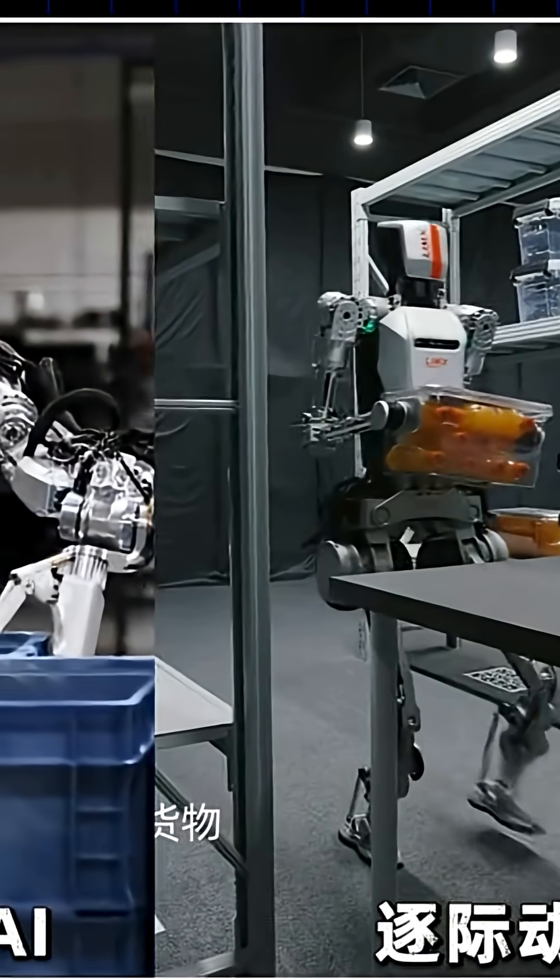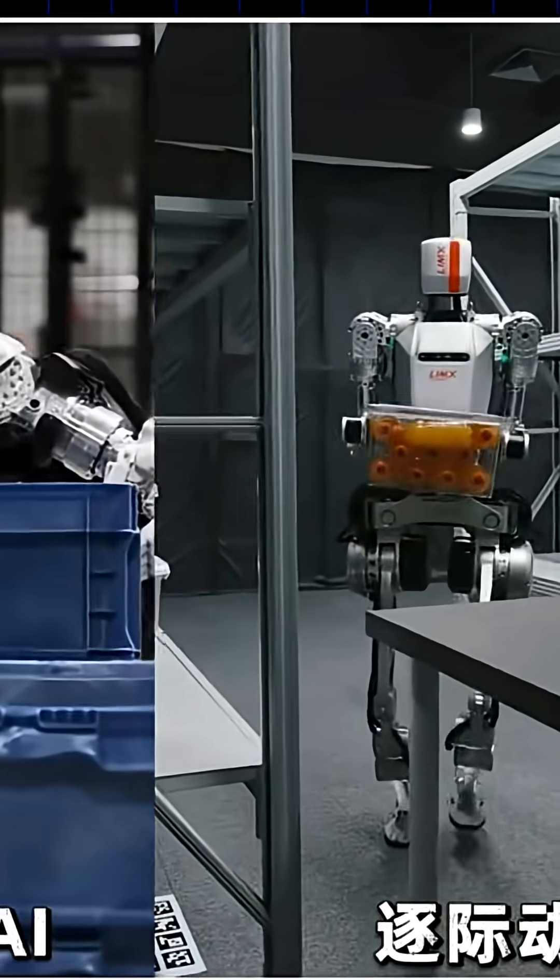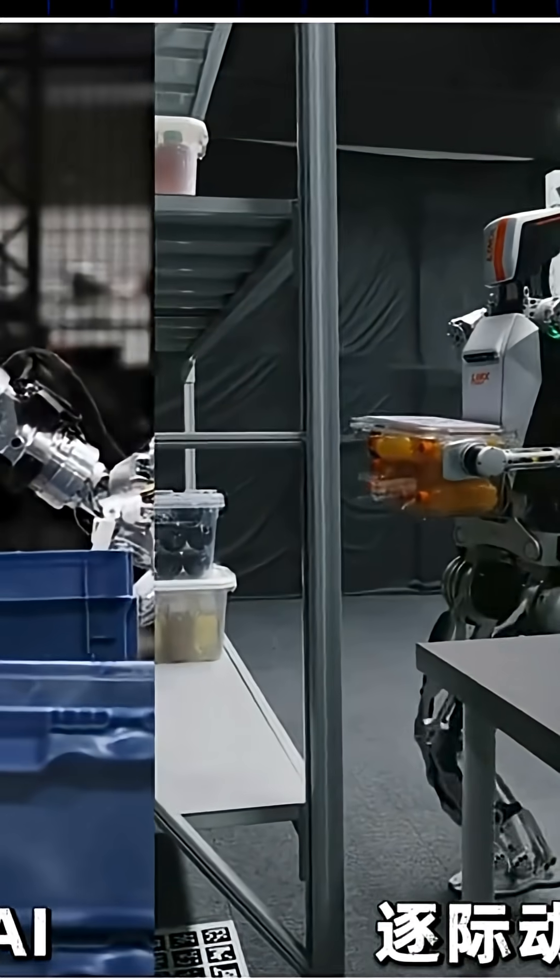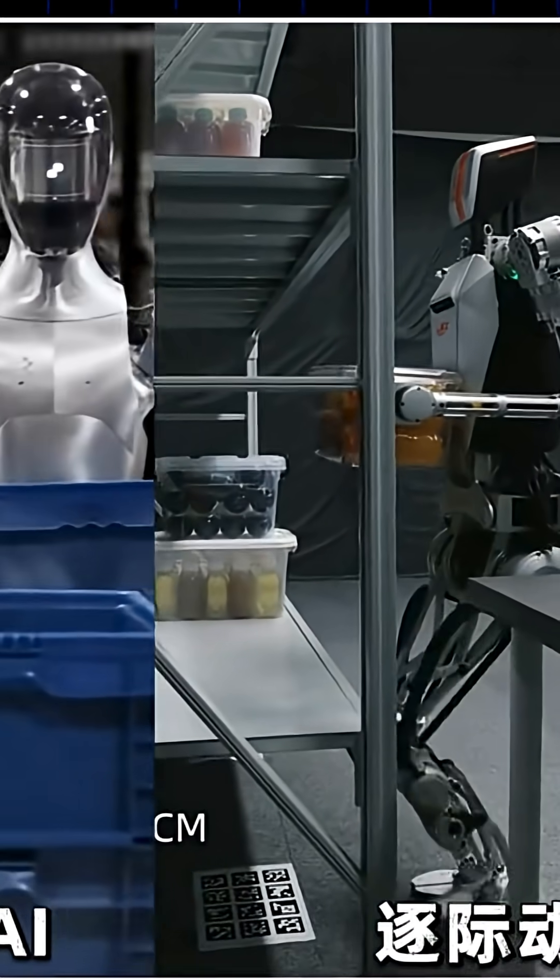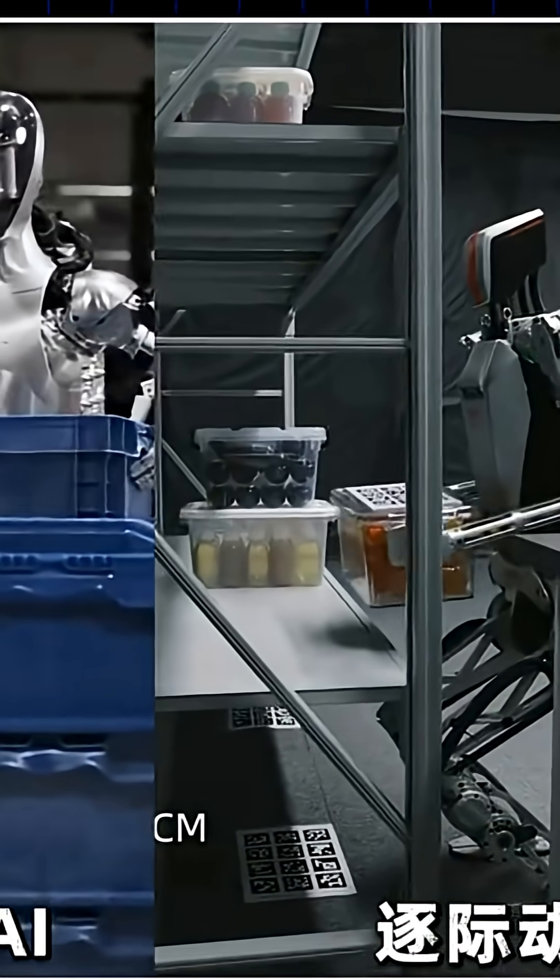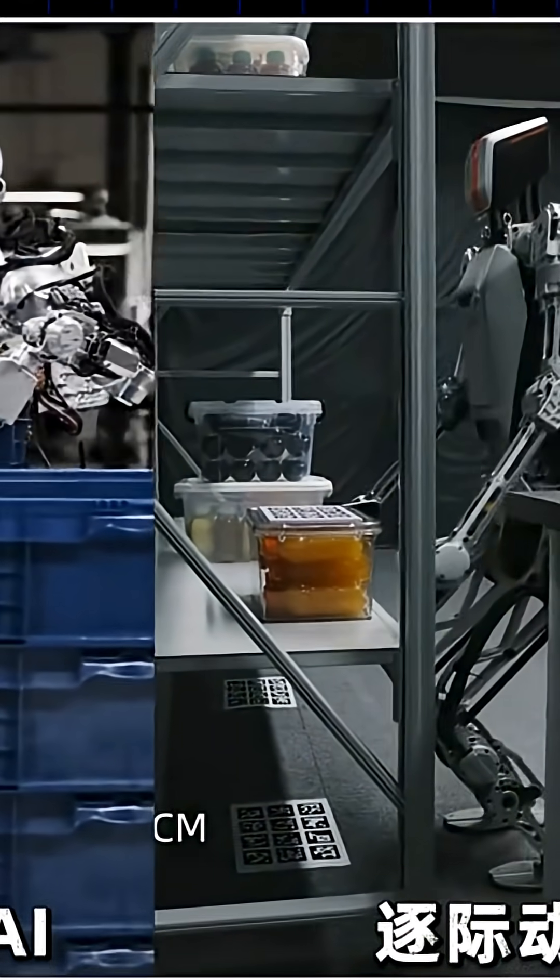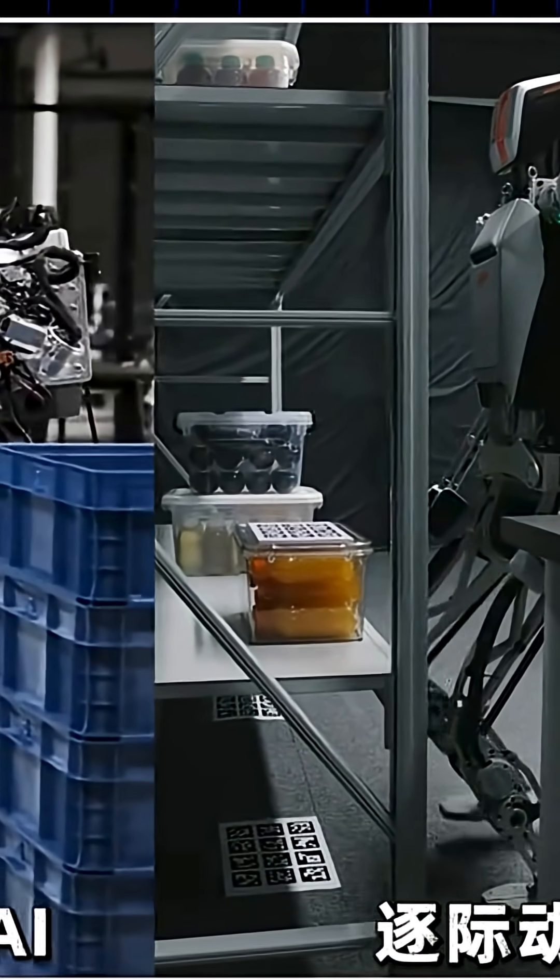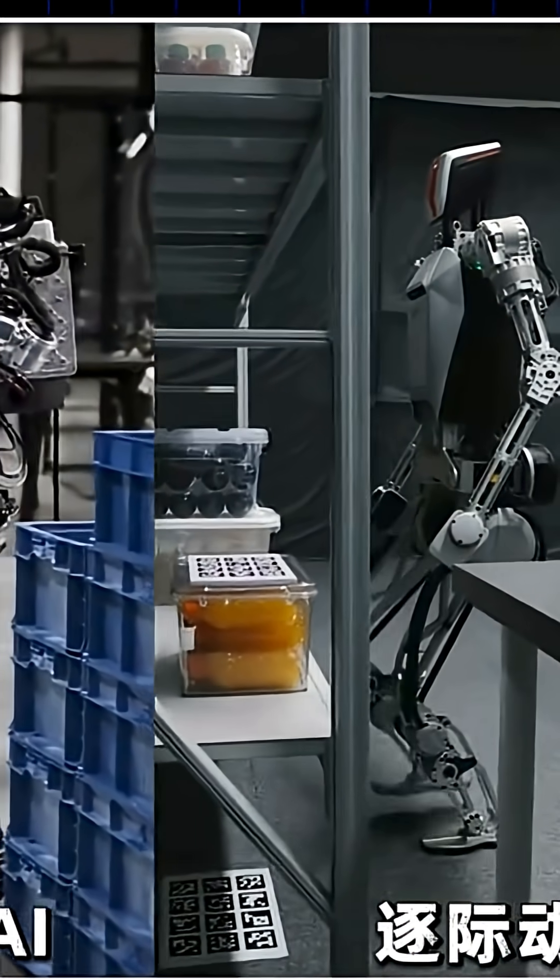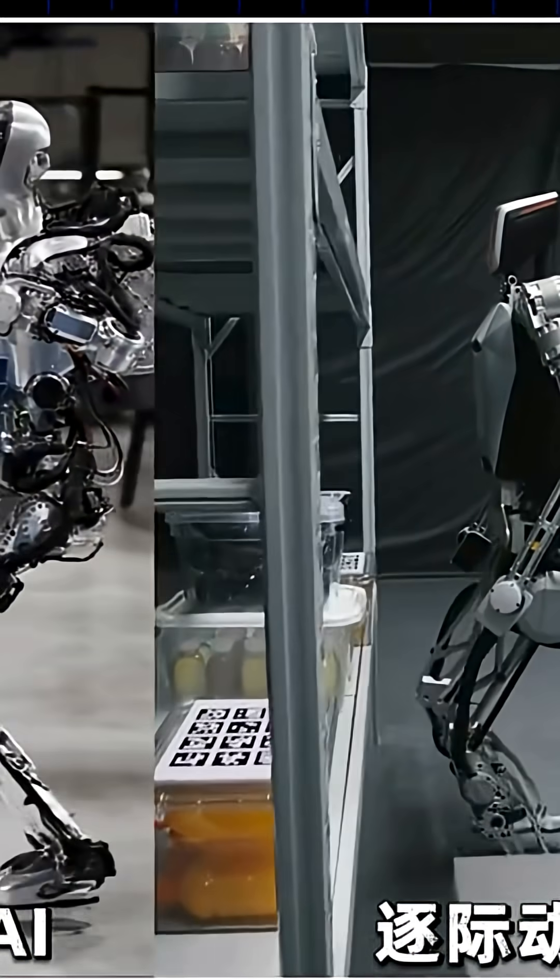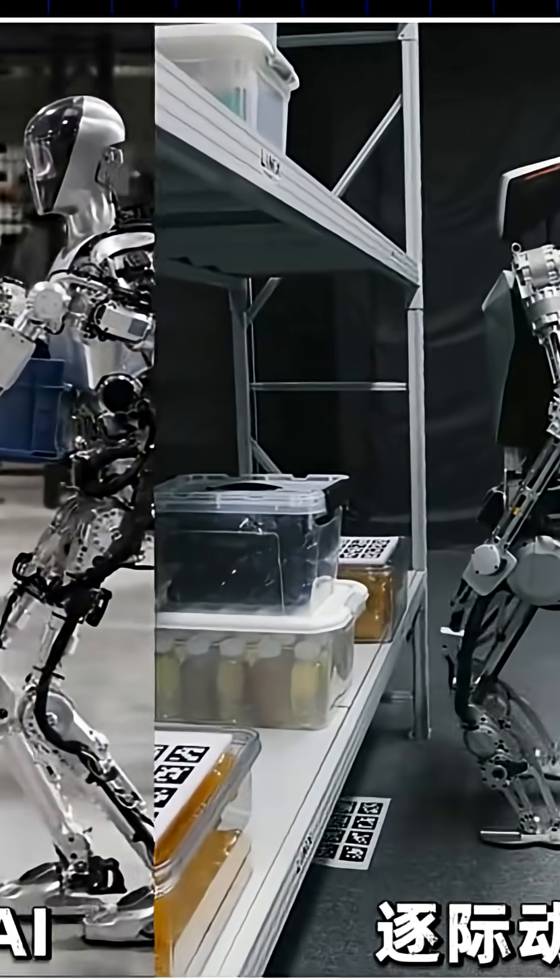This shows Boston Dynamics Atlas humanoid from prone to standing, compared to Zhuji Dynamics. Both robots show outstanding performance in range of motion and full-body stability. Industry insiders certainly know this. Boston Dynamics is top-tier in hardware design and motion control algorithms.